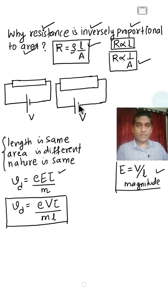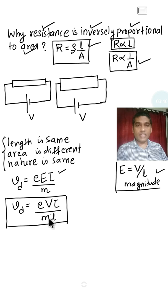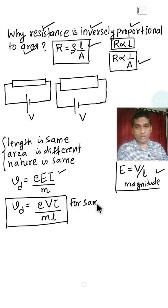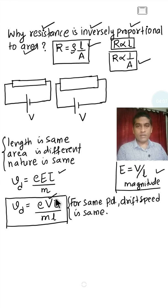Since we are applying the same potential difference V, in this relation V is same, e is the charge on a single electron which is constant, tau depends on the nature of the material and its value is fixed, small m is the mass of a single electron and it is constant, and the length of the conductor is same. Therefore, for the same potential difference V, drift speed is the same for both wires.